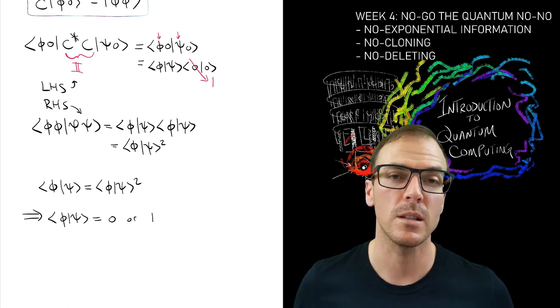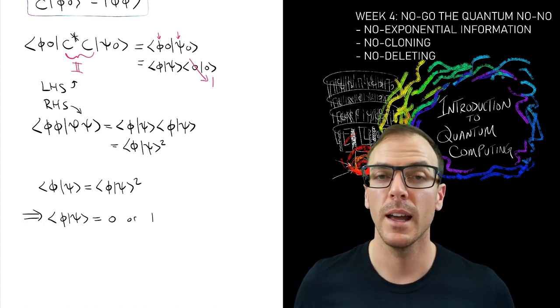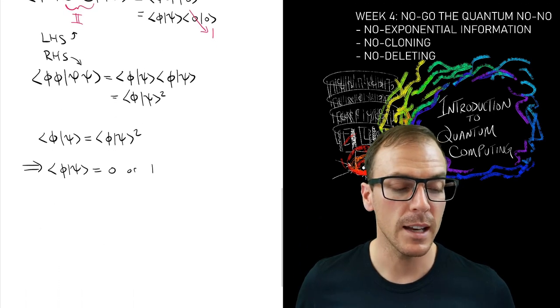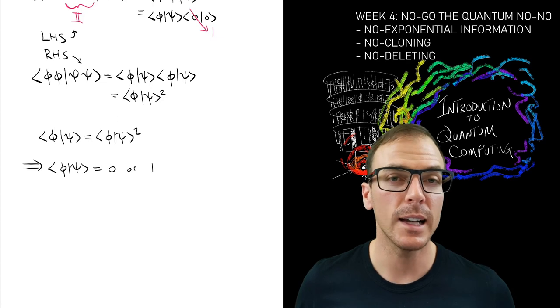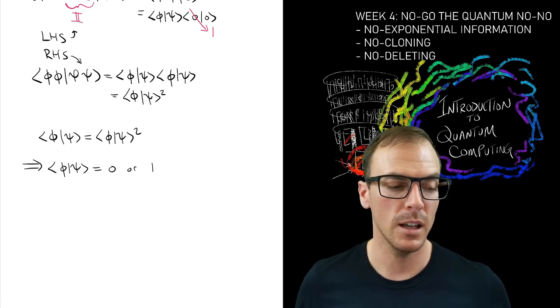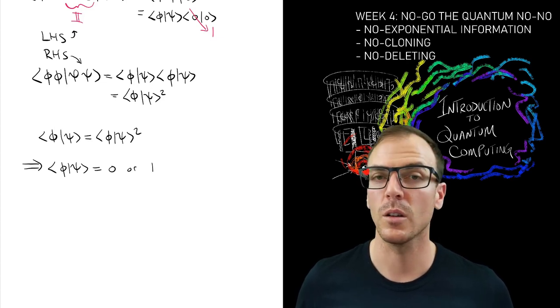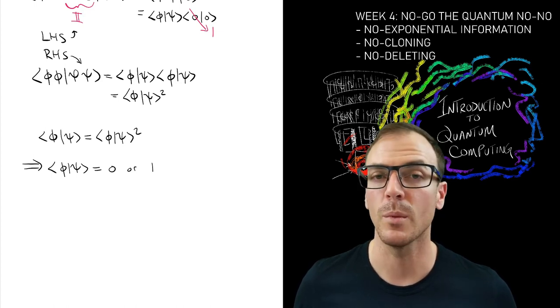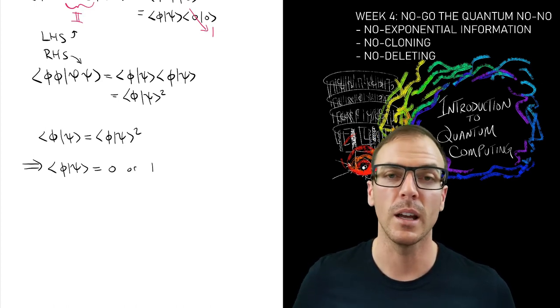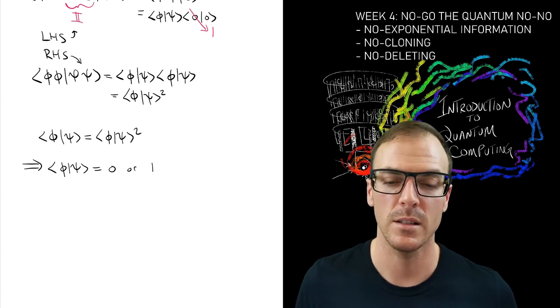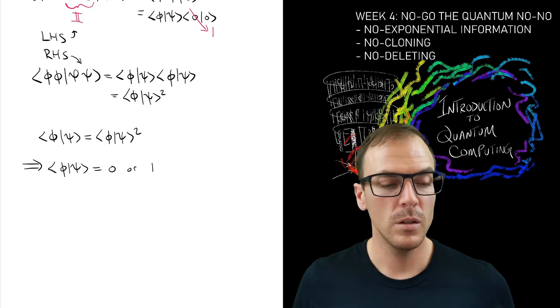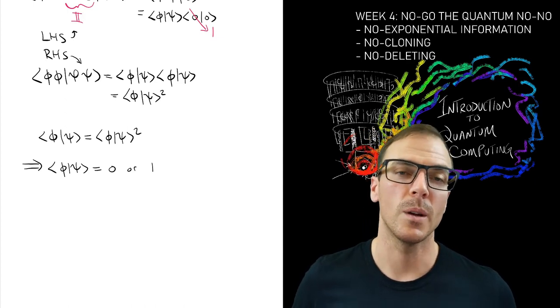What this means is that I can copy an entire basis, but a basis, at least for an n-qubit system, is specified by n bits. So again, I can only ever copy classical information, even if I'm using quantum systems and quantum information as my information processing device. So there is no quantum photocopier.